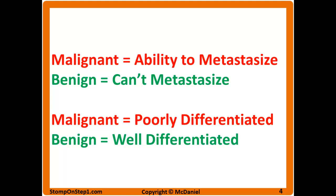Malignant cells no longer look like the mature cells in the surrounding tissue. Through various mutations and epigenetic changes, these malignant cells have become more primitive and have a greater variety of characteristics. These malignant cells are described as being poorly differentiated. Another similar term for that would be anaplastic.